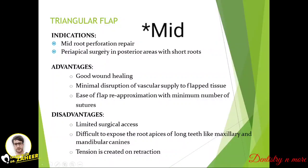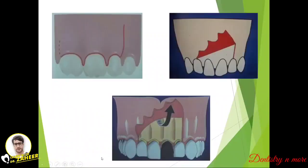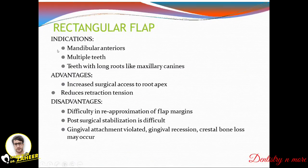The triangular flap is indicated in mild root perforation repair or periapical surgery in posterior areas with short roots. It has good wound healing, minimal disruption of vascular supply, and ease of flap re-approximation. Problems include limited surgical access, difficulty exposing the root apex of long teeth like maxillary and mandibular canines, and tension created on retraction. This flap is named for its triangular shape — one vertical incision and a horizontal incision.